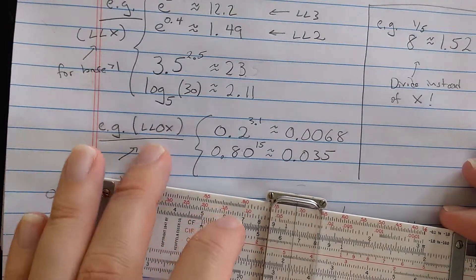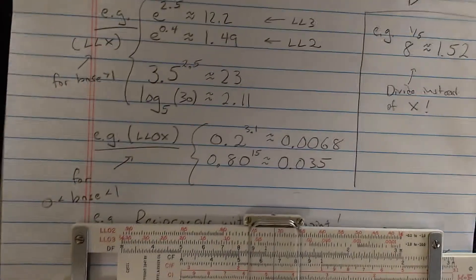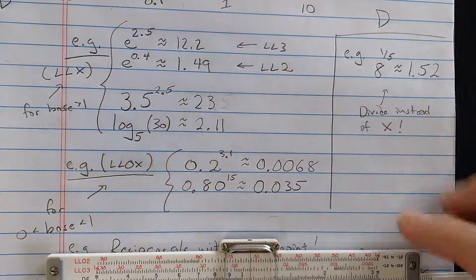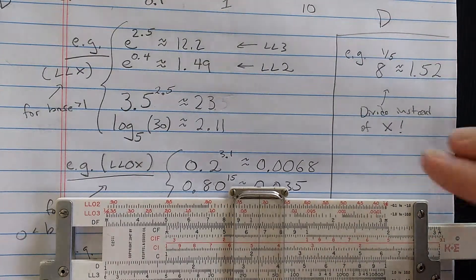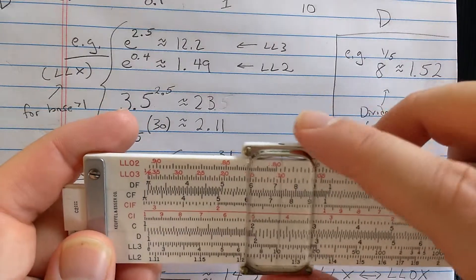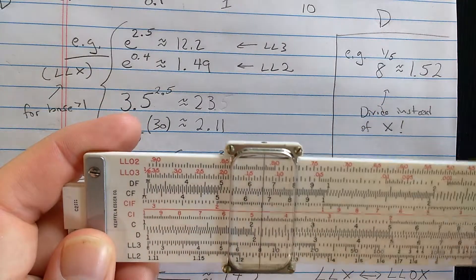Before I talk about the inverted log scales, let's do this arbitrary radical here. So here is the fifth root of 8. How could I compute the fifth root of 8? Well, let's find 8, the base, on log-log 3.